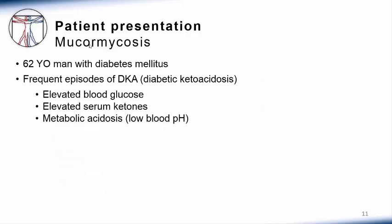Since this presentation is primarily intended for healthcare providers and students, I am going to use patient cases to discuss the basic principles of mucormycosis. The first patient is a 62-year-old man with insulin-requiring diabetes mellitus. He has never managed his diabetes with great care, and his blood glucose levels are often very high. Over the past several years he has developed serious complications of persistently high glucose levels and inadequate insulin administration, including a condition known as diabetic ketoacidosis or DKA. In DKA, patients develop a metabolic acidosis characterized by hyperglycemia and excessive serum ketones, often requiring hospitalization.